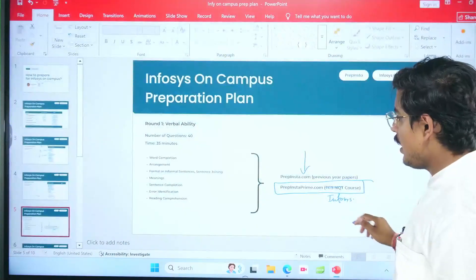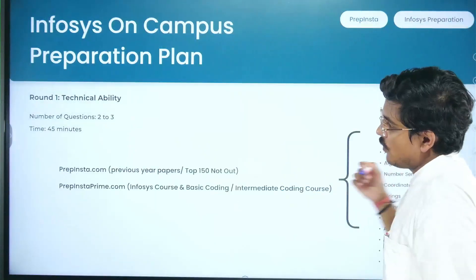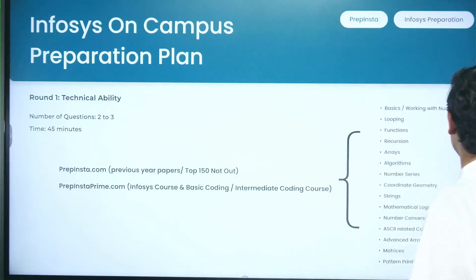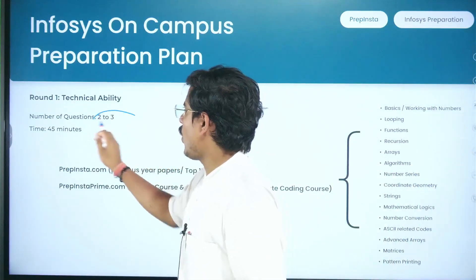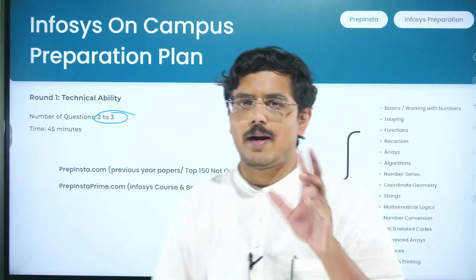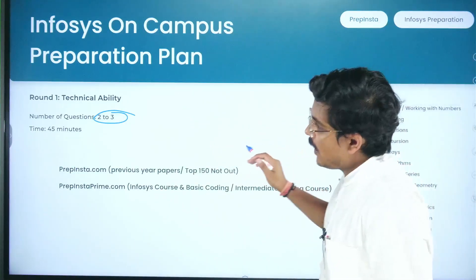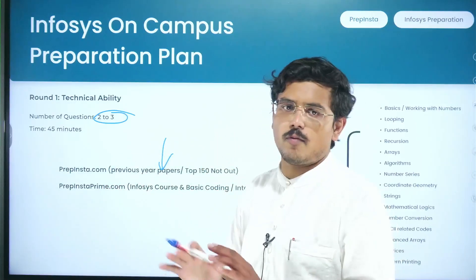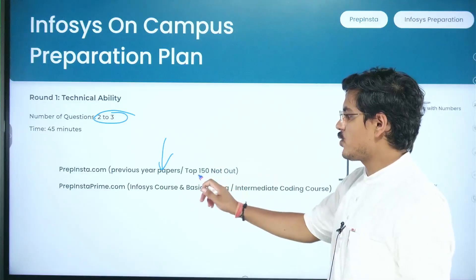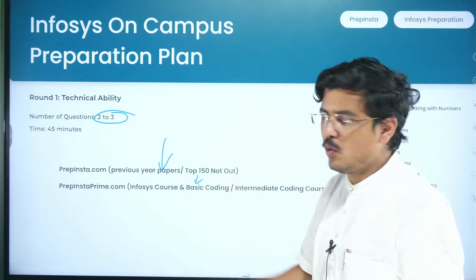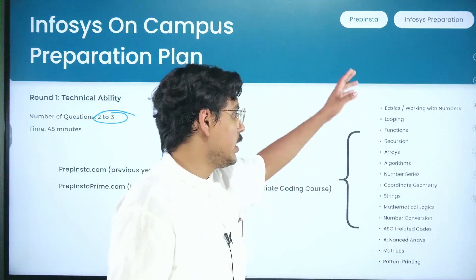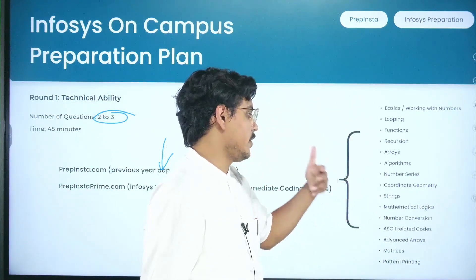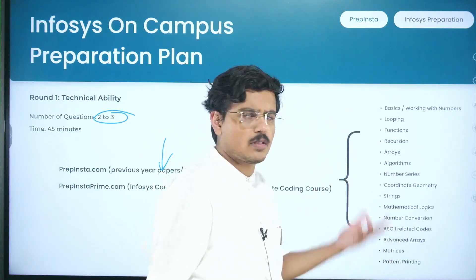Then comes technical ability — generally two to three questions, depending on the college, as the on-campus pattern changes a bit each year. You can practice from previous year papers on prepinsta.com for free, or check out the Infosys course which covers all technical ability topics in detail — coordinate geometry, strings, mathematical logics, all covered there.